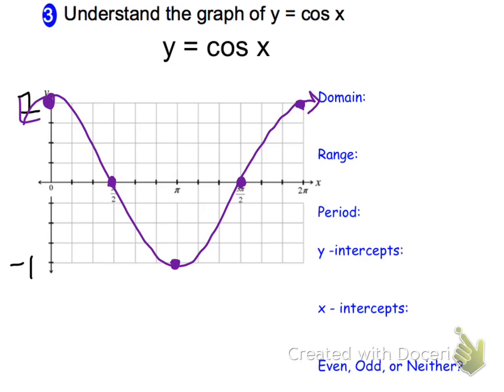And once again, we have that same symmetry over that x-axis. So now let's take a look at some of the information. Domain, again, negative infinity to infinity, because my angles can be anything I want them to be. The range is once again negative 1 to 1, same low and high points.